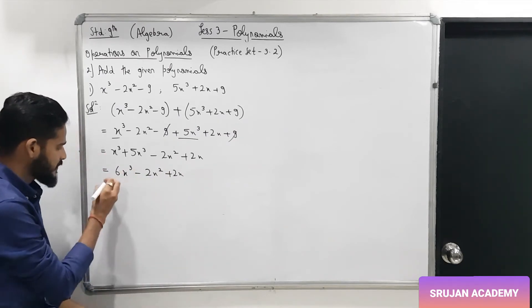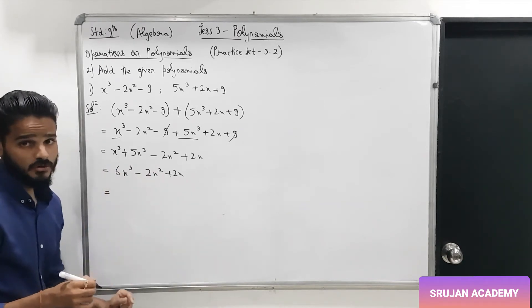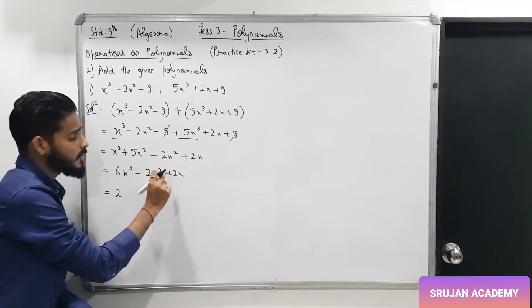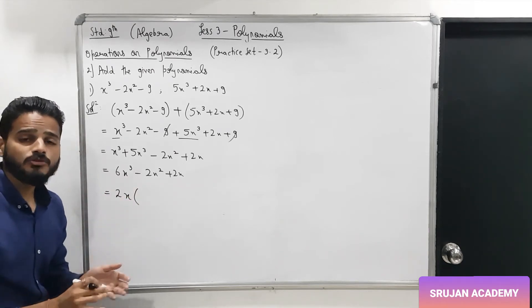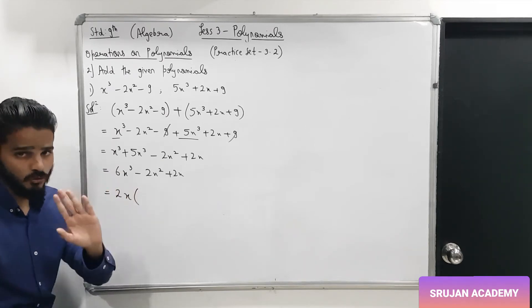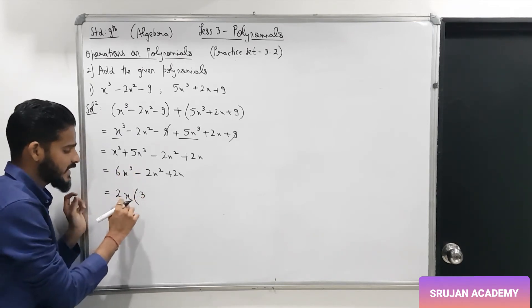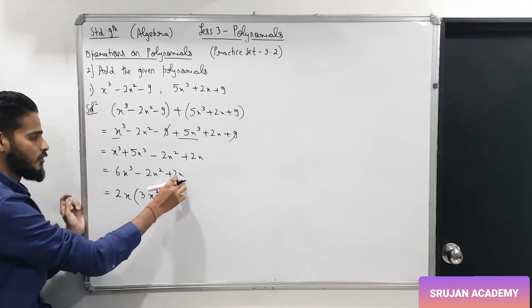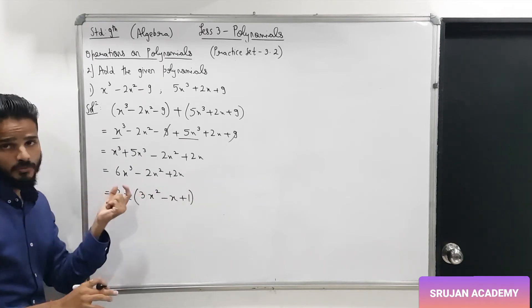You can also simplify further by taking 2 as a common factor, since the coefficients 6, 2, and 2 all have HCF 2. Also take x common — from x³ take out x to get x². So factoring out 2x gives: 2x(3x² − x + 1). Either form is acceptable as your answer.